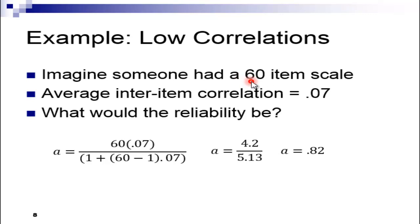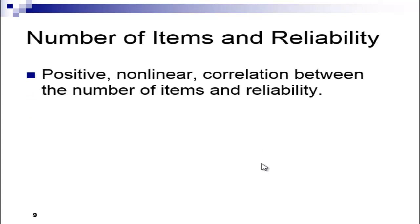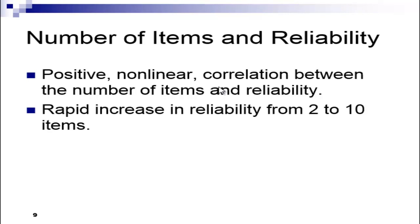It's important to consider that the number of items in a scale has a pretty big impact on the estimate of reliability. It's actually a positive nonlinear effect—you get a rapid increase in internal consistency reliability as you increase the number of items from two to ten, and then a steady increase from eleven onward.